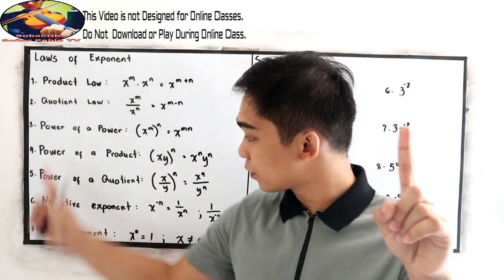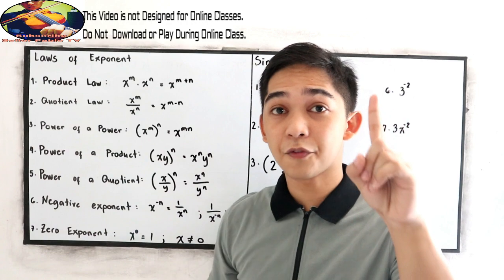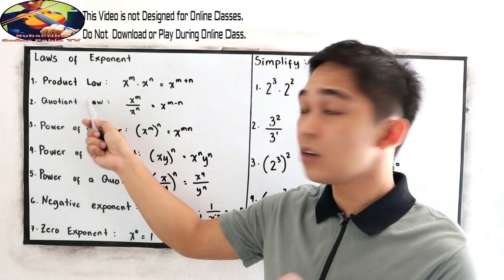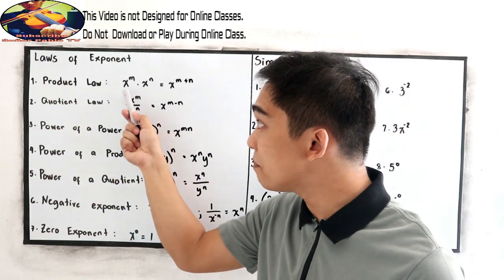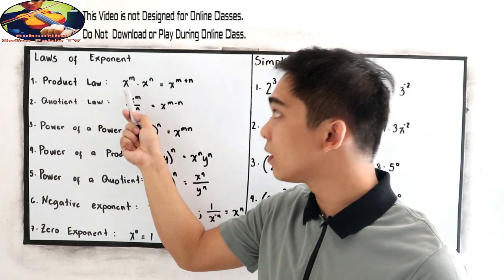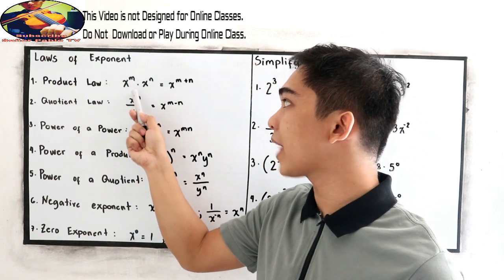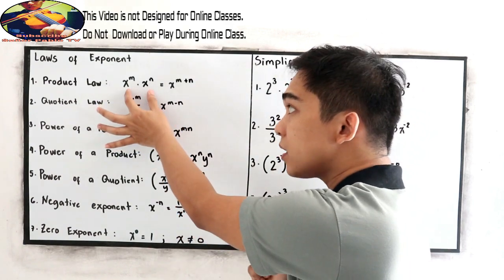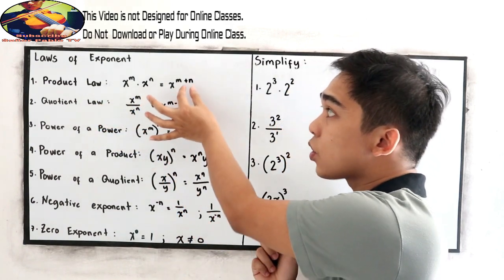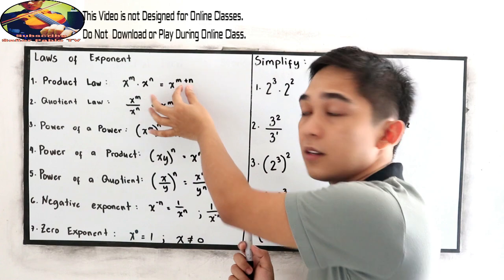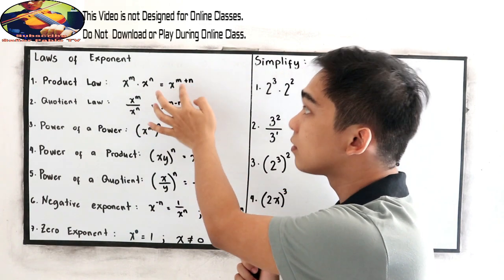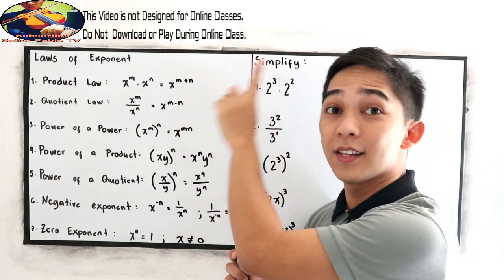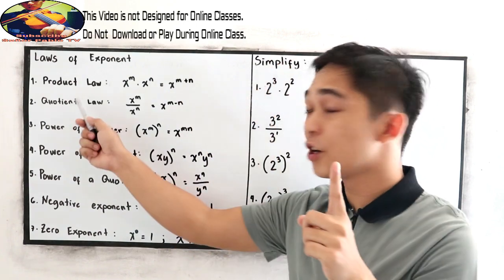Let's discuss laws 1 to 7. The first one is the product law. In the product law, if we have the same base — x raised to m times x raised to n — since we have the same base, we're just going to add the exponents: x raised to m plus n. That is the product law.